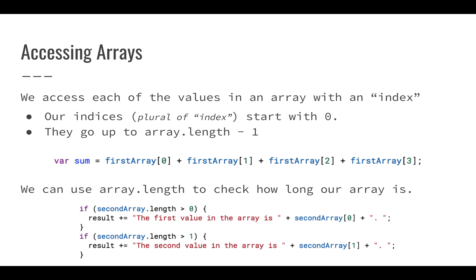We can access each one of these values with an index. So in arrays, and most things in computer science when we're dealing with programming, most things start with zero instead of one, and they go up to array.length minus one. So you can see here, var sum, we're going to get the first value from our first array, the second value, the third value, and the fourth value. Even though it says zero, one, two, and three, we tend to look at this as the first, second, third, and fourth values.